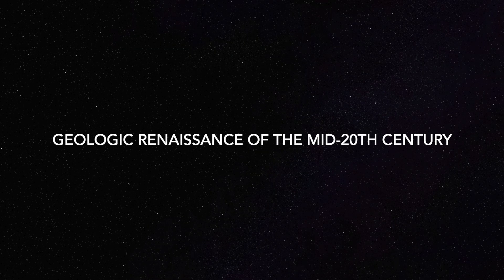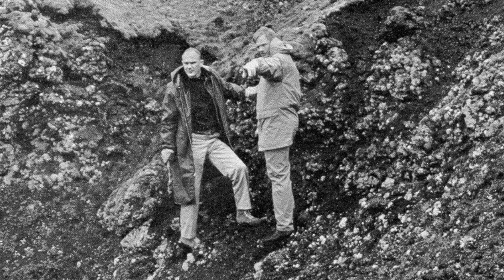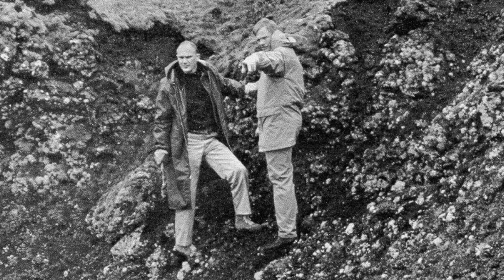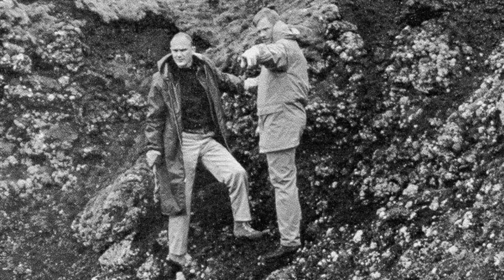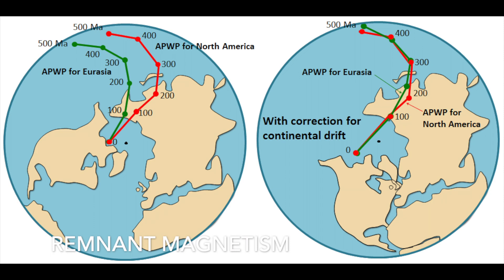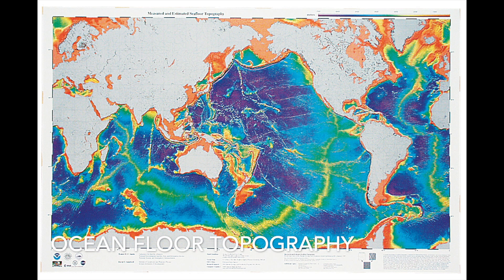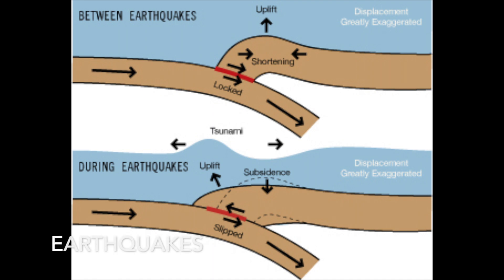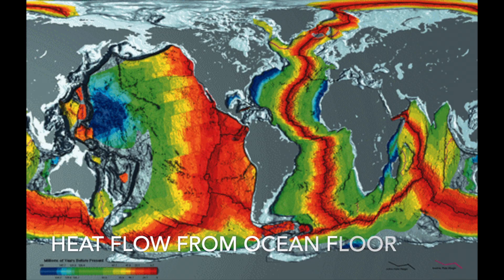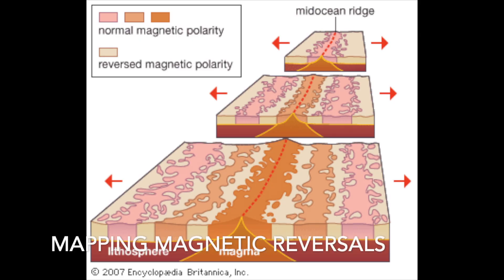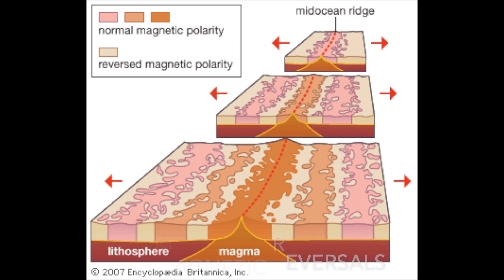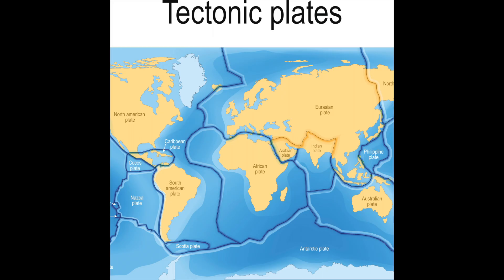Geological Renaissance of the mid-20th century. Giant strides were made in understanding Earth during the middle decades of the 20th century, including discovering remnant magnetism as evidence of continental drift, mapping the topography of the ocean floor, describing the depth relationships of earthquakes along ocean trenches, measuring heat flow differences in various parts of the ocean floor, and mapping magnetic reversals on the seafloor. By the mid-1960s, the fundamentals of the theory of plate tectonics were in place.